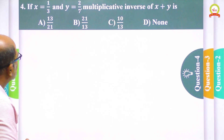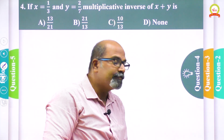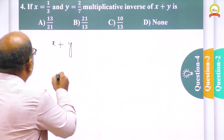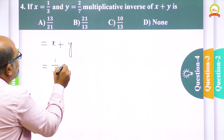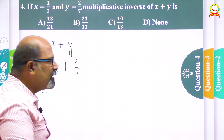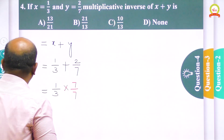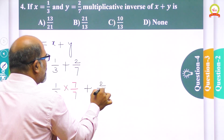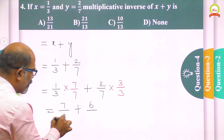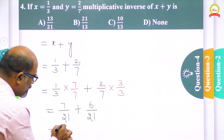The next question, the fourth one: if x = 1/3 and y = 2/7, the multiplicative inverse of x plus y is asked. First I am going to find x + y. The value of x is 1/3 and the value of y is 2/7. I convert to equivalent fractions with the same denominator: I multiply 1/3 by 7/7 to get 7/21, and multiply 2/7 by 3/3 to get 6/21. Adding gives 13/21.